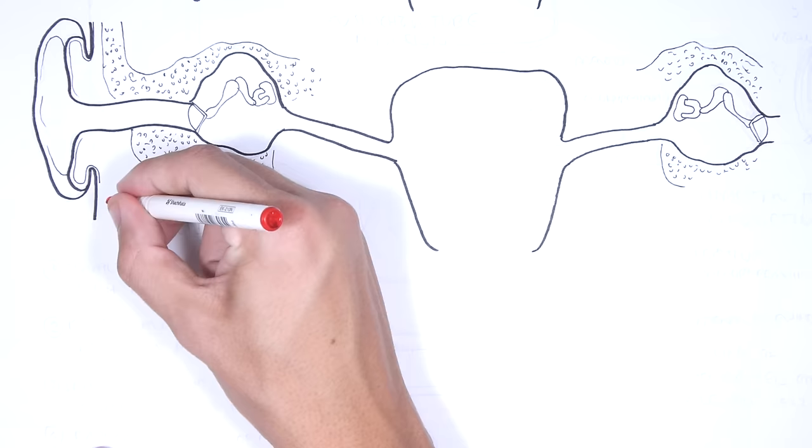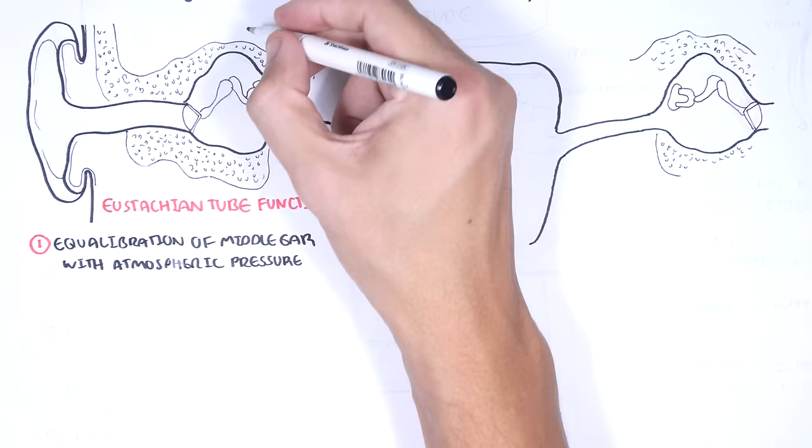The eustachian tube is a pretty important structure and serves many roles. It permits equilibration of middle ear pressure with atmospheric pressure.